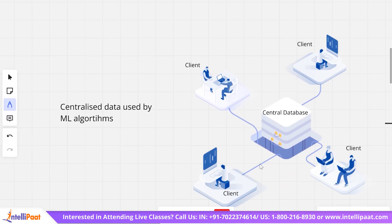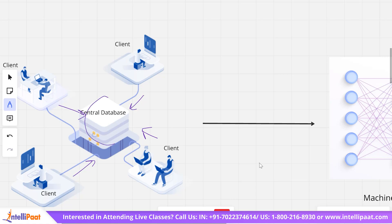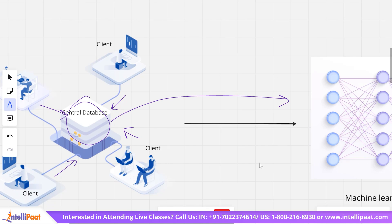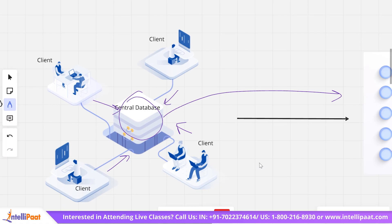The normal or traditional approach would be through centralized data used by machine learning algorithms. The data is collected from all the users or clients — basically, the millions of devices using that application will have data collected over time. All that data is sent to a central database. Using this central database, a machine learning algorithm is applied to find new patterns or learnings and make predictions. Once the model is trained on this central database, it is deployed back to the users. Periodically new data is collected and sent to the server to retrain and update the model, and the central database sends the updated version back to the users. This happens in a loop.